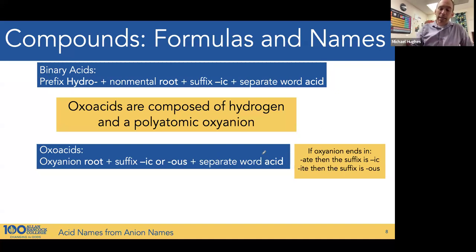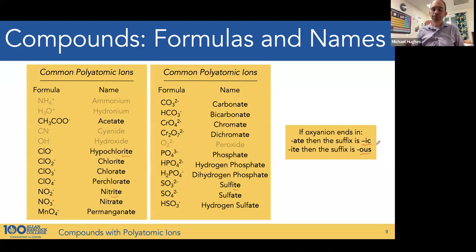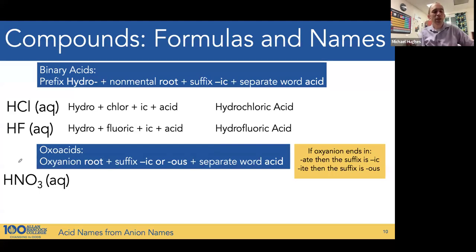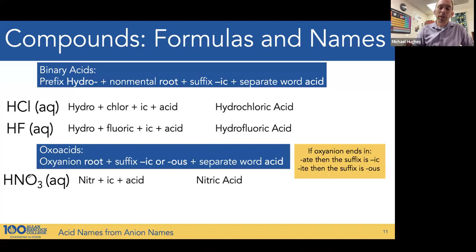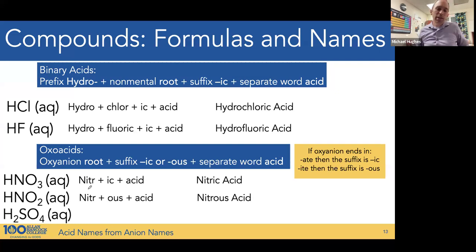If the oxyanion had an -ate suffix, like acetate, chlorate, or perchlorate, the suffix changes to -ic. If the suffix was -ite, like sulfite, nitrite, or hypochlorite, then -ite becomes -ous. So nitrate with a hydrogen and aqueous is an oxoacid with -ate, so it becomes nitric acid. NO2 is nitrite, so with H+ and aqueous it's an acid — nitrite's -ite becomes -ous, making it nitrous acid.